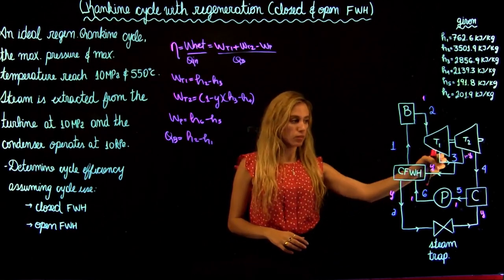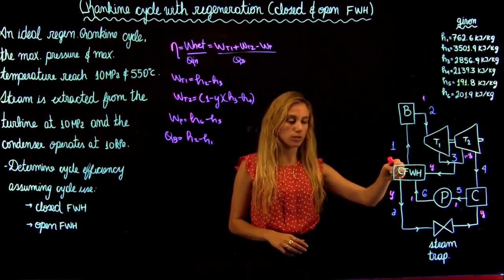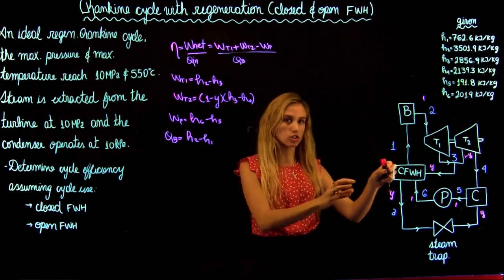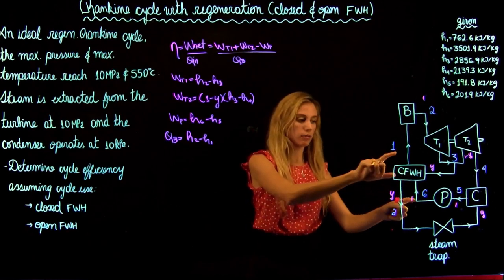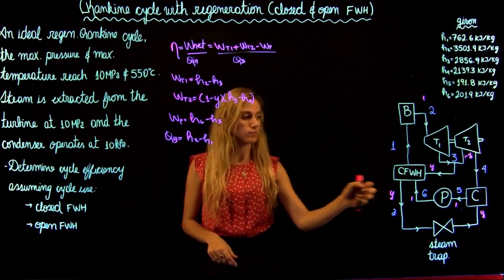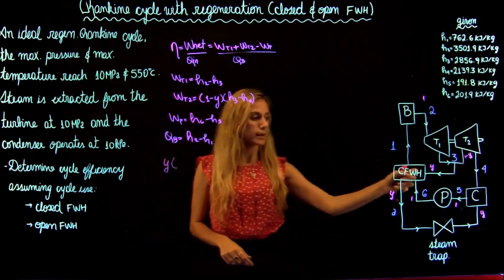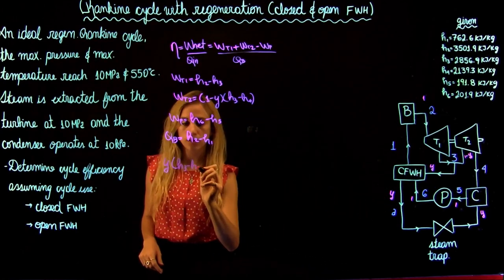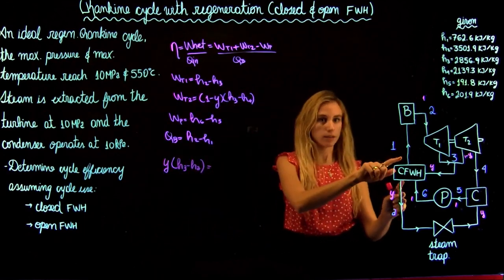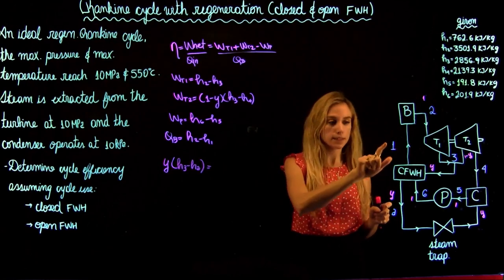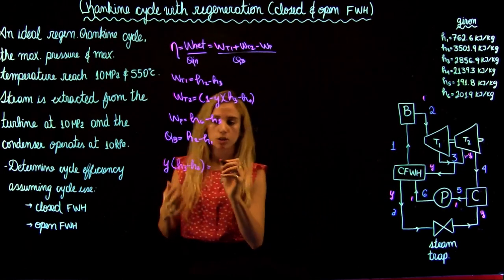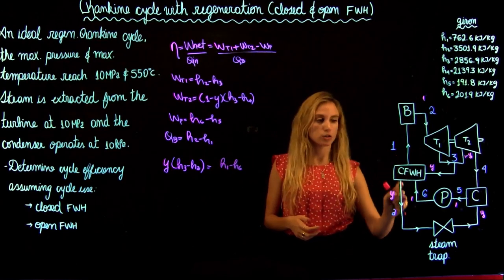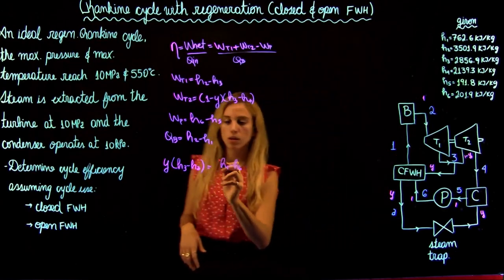Looking at the closed feed water heater, we see the flow coming from 3 going to A with a mass fraction of Y. We take that energy and put it into the flow from 6 to 1. So we have the mass fraction Y times (H3 minus HA), since energy at 3 is higher than at A. This energy is input into the flow from 6 to 1, meaning at state 1 we have higher energy than at state 6. So that gives us H1 minus H6, with 100% mass fraction equal to 1.